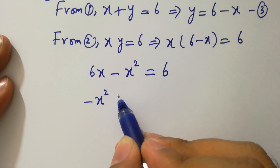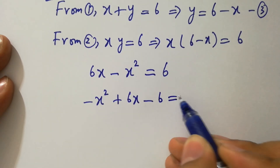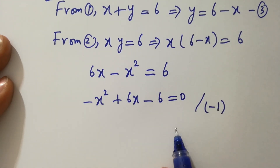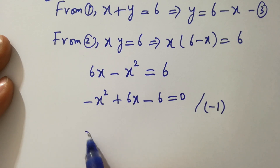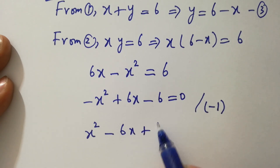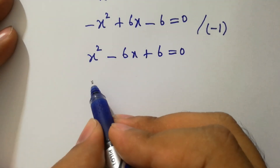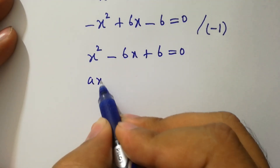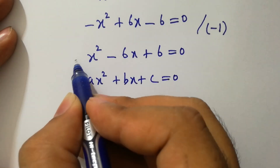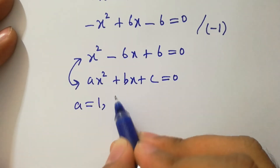Expanding, we have 6x minus x squared equals 6. Rearranging: minus x squared plus 6x minus 6 equals 0. Dividing both sides by minus 1 gives x squared minus 6x plus 6 equals 0. This is a quadratic equation of the form ax squared plus bx plus c equals 0.